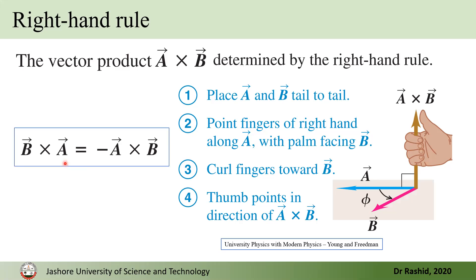B cross A equals minus A cross B. That is, instead of going from A to B, if you move your fingers from B to A, the direction will be opposite — that is, in the downward direction.